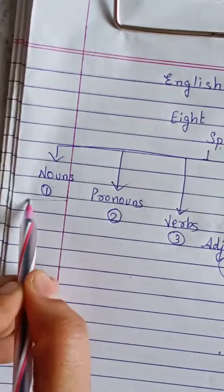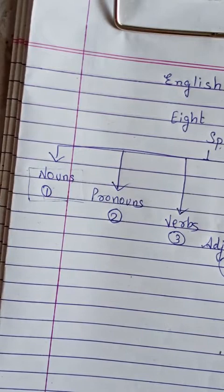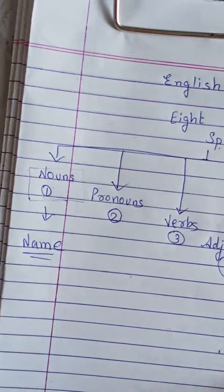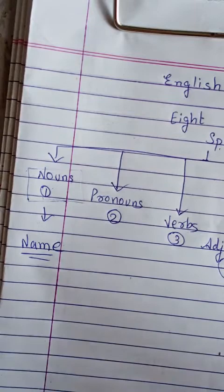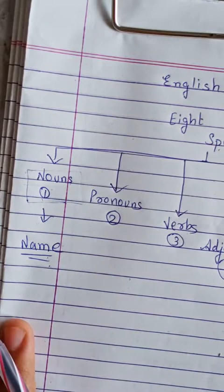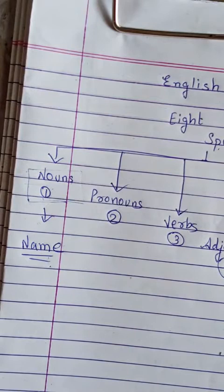Today we will begin with nouns. We know that nouns are names — whichever name you speak, that is a noun, whether it is the name of an animal, a place, a city, a country, or a person. Nouns are of many types, so today we have to get a clear idea about types of nouns, but first let's start with the definition and some common examples.